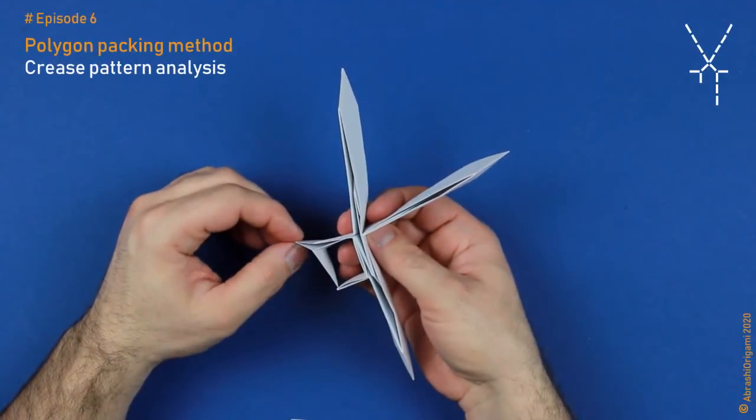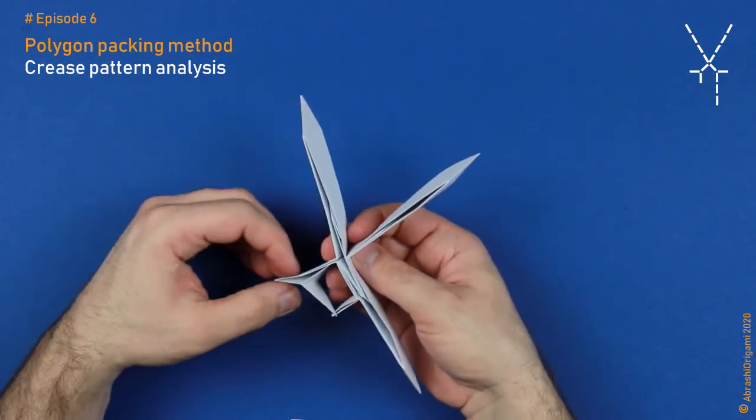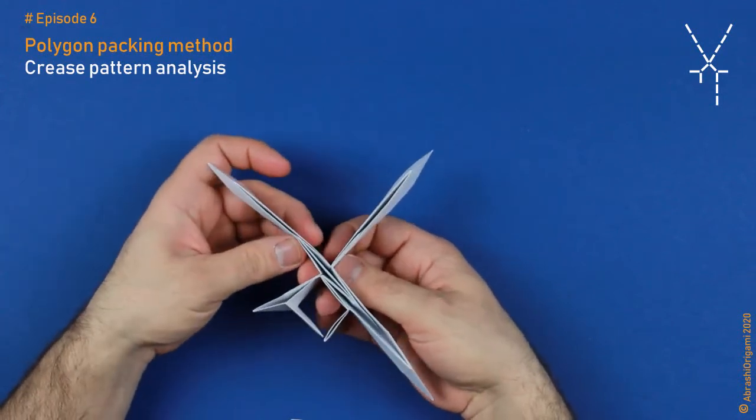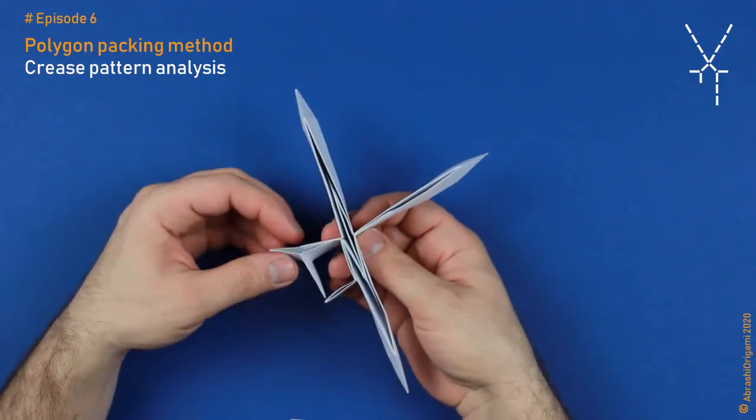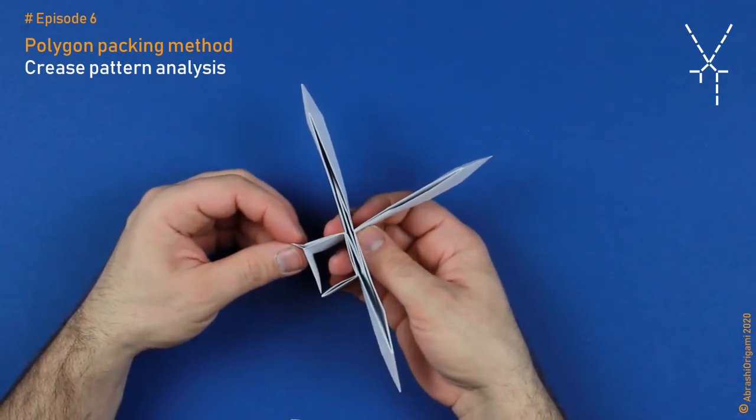In the previous episode I've shown you how to define the orientation of all creases. Also, I hope you remember, I have told you that hinge creases, even though they define polygons, are most often just partially present. Even though this may seem to be a problem, it actually isn't.